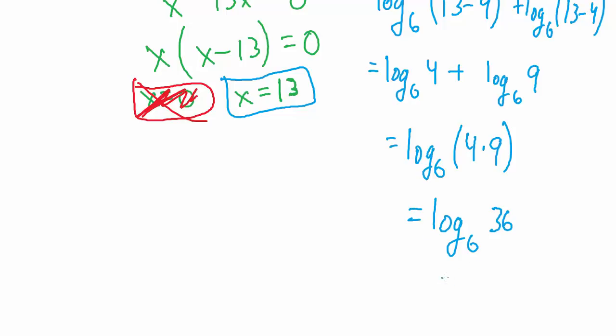And this simplifies to just plain old 2, because when we say the base 6 log of 36 what we're really saying is what number do we have to raise 6 to to get 36. And the answer is 2. We have to raise 6 to the number 2 to get 36.